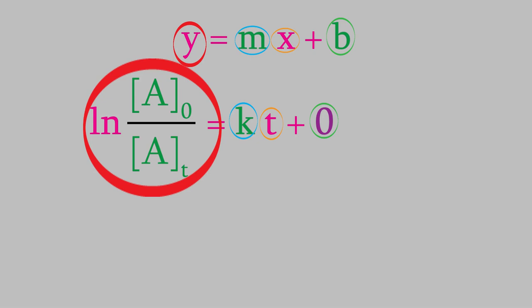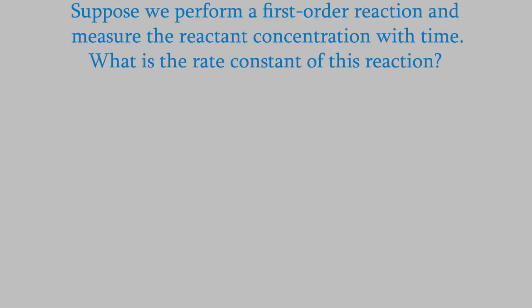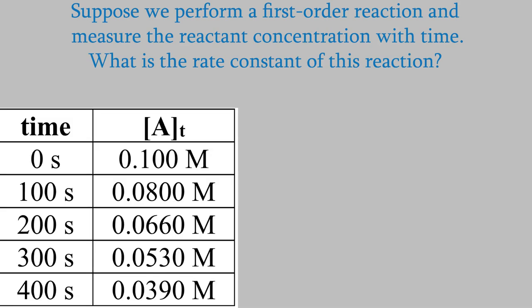So the first-order equation really is similar to the equation for a straight line. That means if we have data for a first-order reaction, we should be able to make a graph with time on the x-axis and the logarithm term on the y-axis. That should give us a straight line with a slope equal to k, the rate constant, and a y-intercept of zero. Let's try it. Suppose we perform a first-order reaction and measure the concentration of the reactant at different times as the reaction happens. Here's the data we get. Suppose we want to know the rate constant — how can we get it?